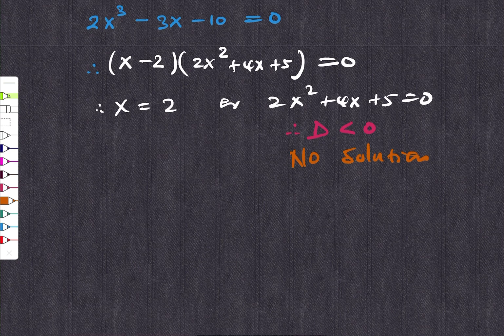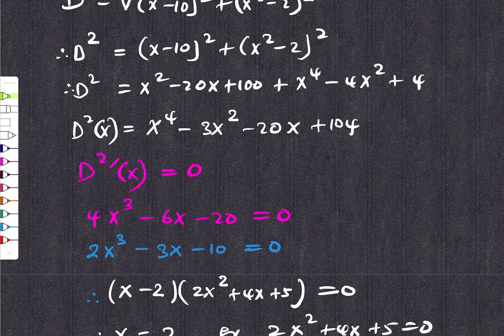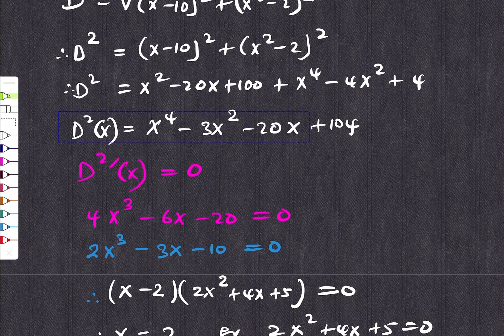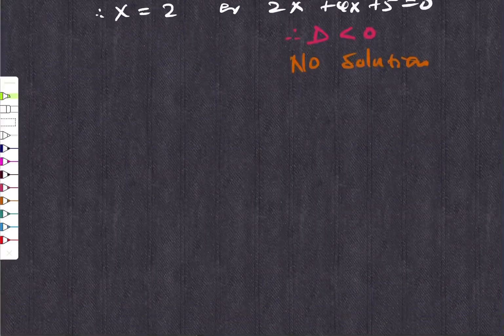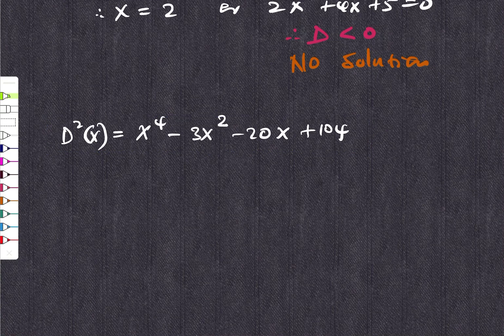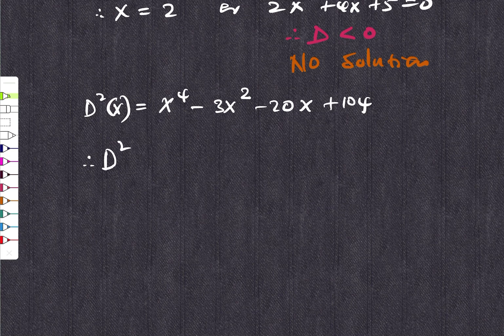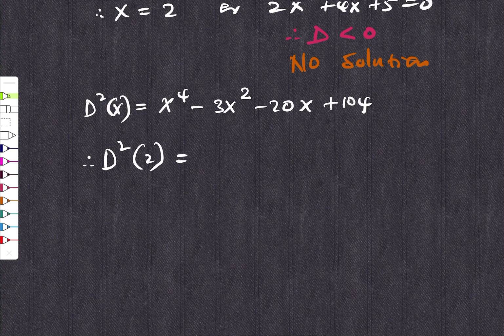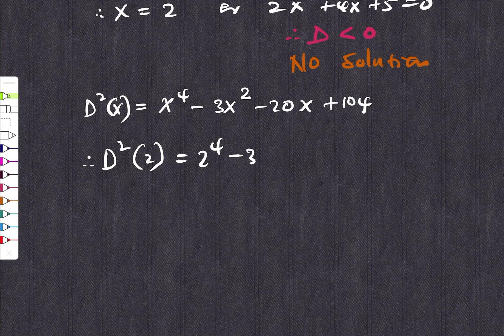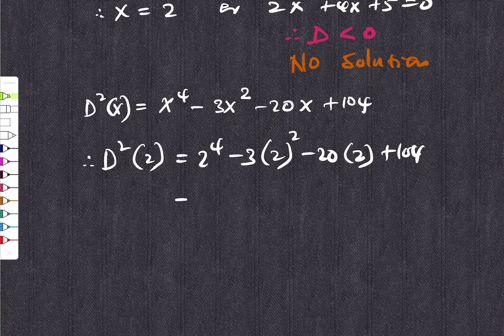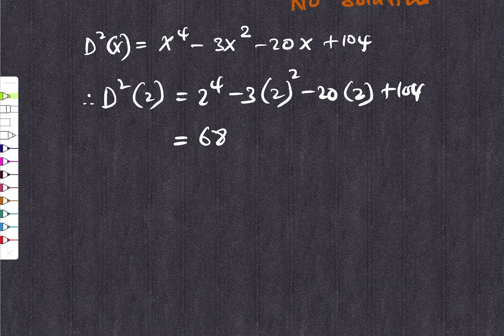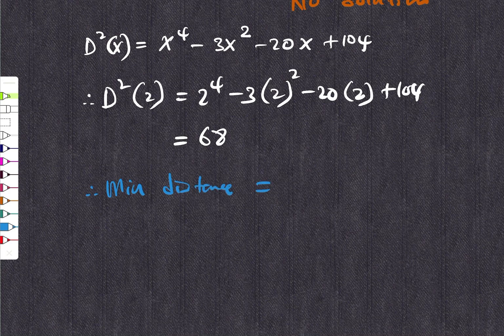So look, they are looking for the minimum distance. So you are going to substitute it from this polynomial here. I'm going to plug 2 here to say that the minimum distance is going to be D² of 2. If you substitute 2, that is going to be 2⁴ - 3(2²) - 20(2) plus 104. As a result, you are going to get 68. So therefore, you can say that the minimum distance is going to be √68 units.